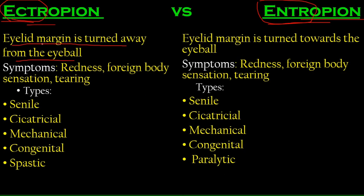So eyelid margin is turned away from the eyeball — that's ectropion. Eyelid margin is turned towards the eyeball — that's entropion. Symptoms are similar for both: redness, foreign body sensation, and tearing.